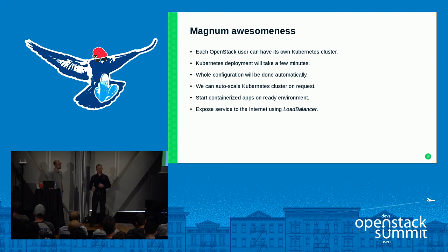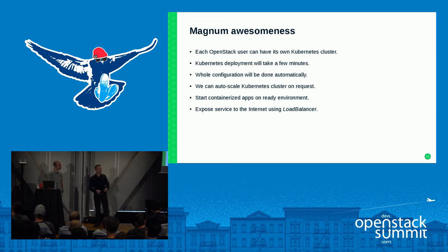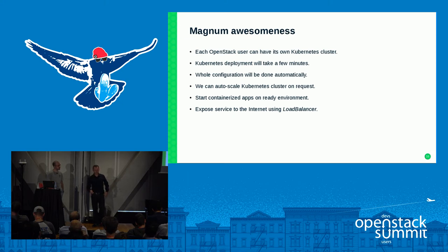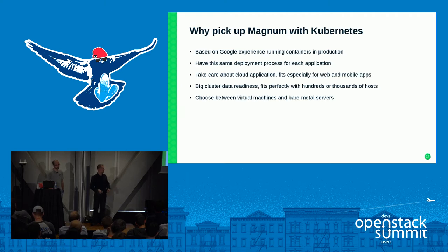Why is OpenStack Magnum so awesome? Everybody can have their own Kubernetes cluster, and the deployment will take only a few minutes. For example, last week a user tried to deploy a Kubernetes cluster manually — it took him something like seven days. We'll do this in our demo in a couple of minutes. The whole configuration is done automatically. We can autoscale our cluster and platform on demand, start our containerized application on this ready environment, and expose it to the internet using the load balancer.